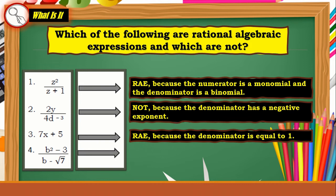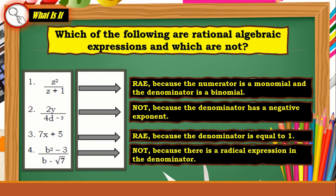Now the last example: (b² - 3) / (b - √7). It is not a rational algebraic expression. Why? Because there is a radical expression in the denominator — the square root of 7 — which means the denominator is not a polynomial.